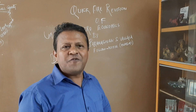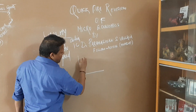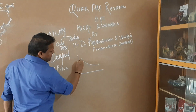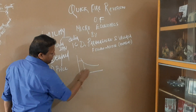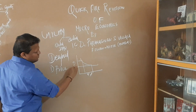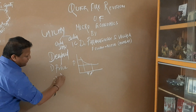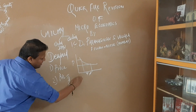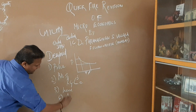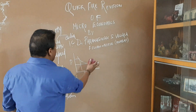Demand for a product is the desire for a product backed by willingness and ability to pay. This is represented by the demand curve. The first major determinant is price — higher the price, lower the quantity demanded, and lower the price, higher the quantity demanded. On the Y-axis we show price, on the X-axis we show quantity demanded. The second determinant is price of related goods — substitutes or complementaries. Third is income, and fourth is advertisement. Then technology, taste and preference, etc.